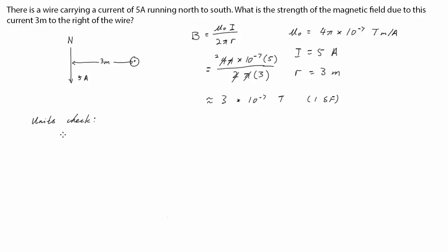The constant μ₀ has units tesla meters per amps. Current has units of amps. 2 and π are both unitless. And then we're dividing it by distance, so meters.